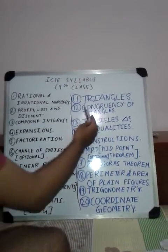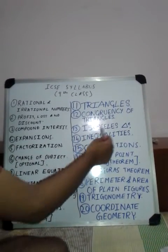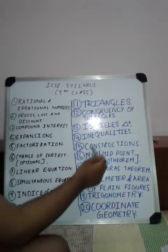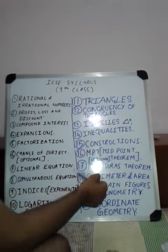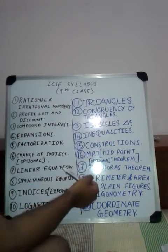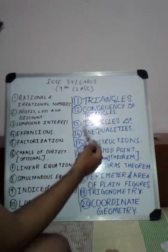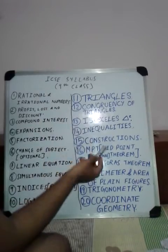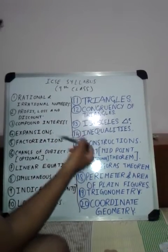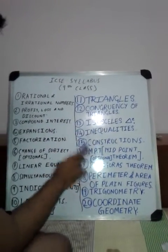Then we come to triangles, congruency of triangles, isosceles triangle, inequalities, and constructions. In constructions we will learn about constructing 60 degrees, 90 degrees, 45 degrees, circumcircle, incircle, and all the shortcuts and tricks — I will tell you everything.